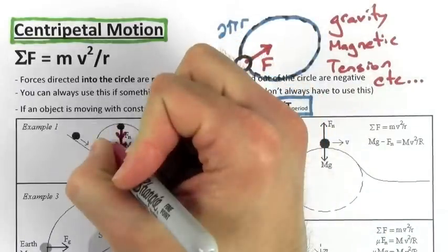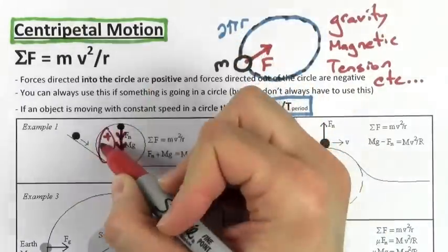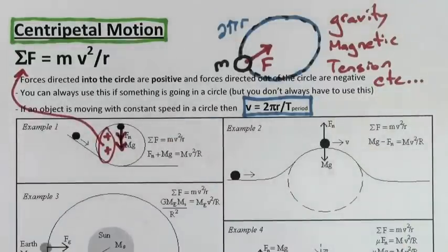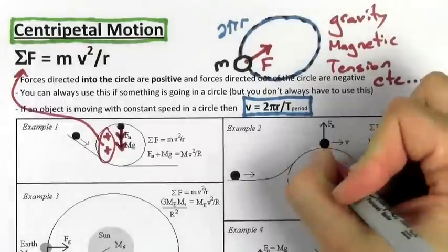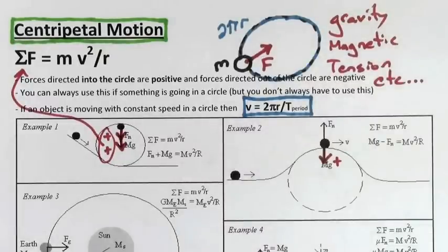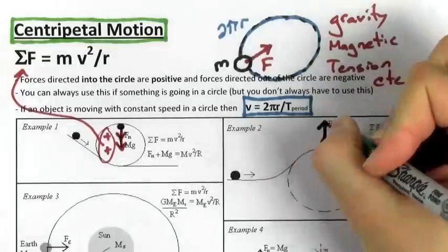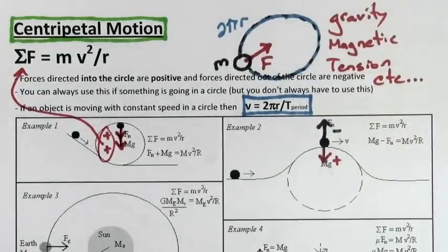In this example, both forces are pointing downward, but they're still considered positive since they point toward the center of the circle. In this example, the downwards force is considered positive since it points toward the center of the circle, but the upwards force is considered negative since it points away from the center of the circle.